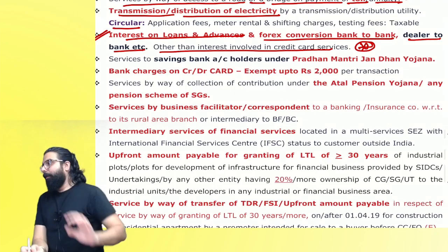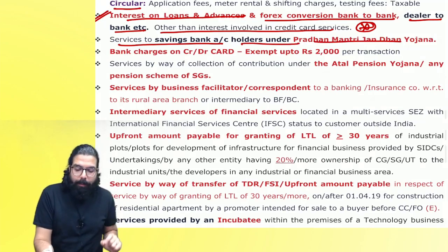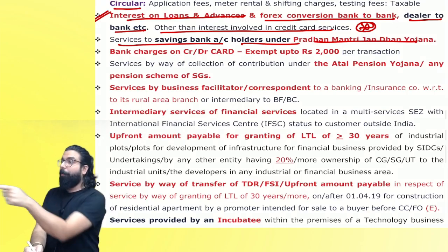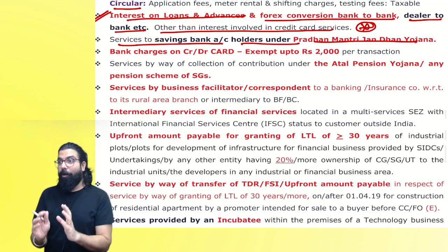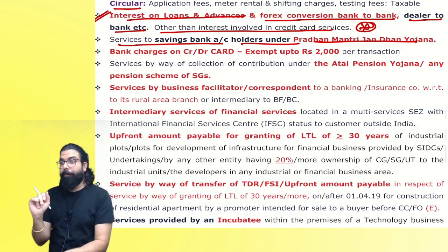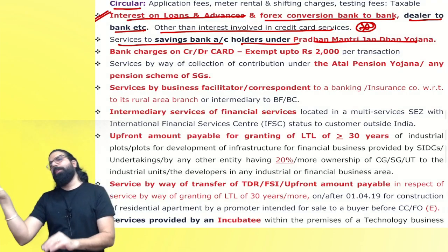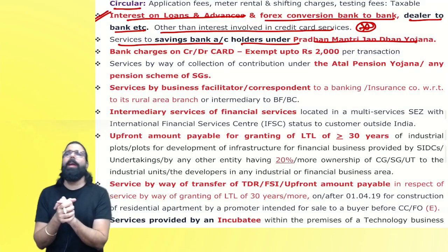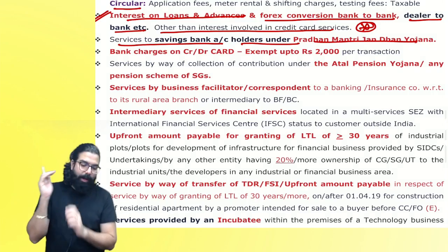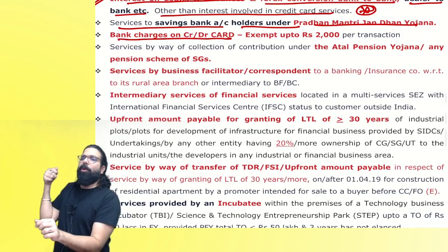Remember one thing: interest on credit card service is taxable. The next one is services to savings bank account holders under Pradhan Mantri Jan Dhan Yojana — zero balance accounts. Imagine a zero balance account being charged ₹200 debit card charges plus GST — government told don't charge any GST to those people holding Pradhan Mantri Jan Dhan Yojana savings bank accounts.